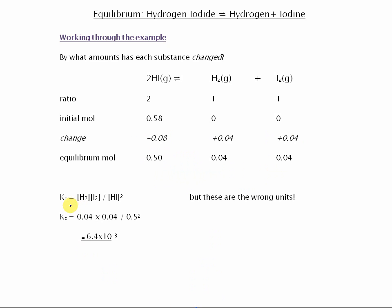We can carry on and write out the expression for Kc again and put the values in there. And here we've got our answer for Kc, and that's a correct answer. The units don't quite work out because these values are in mole. Whereas when you're talking about Kc, we're defining concentration, which is mole per unit volume.